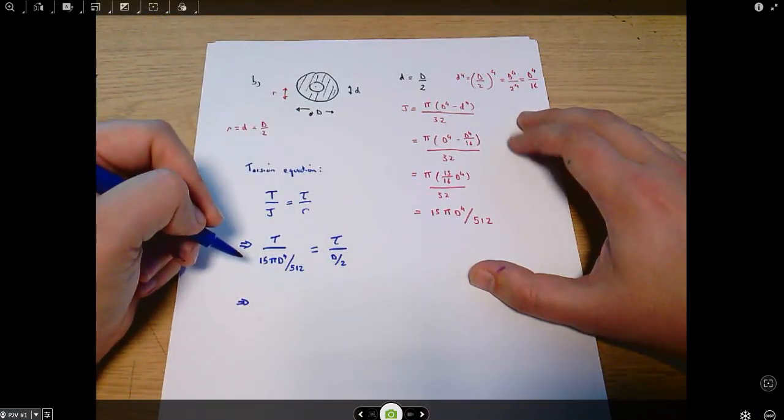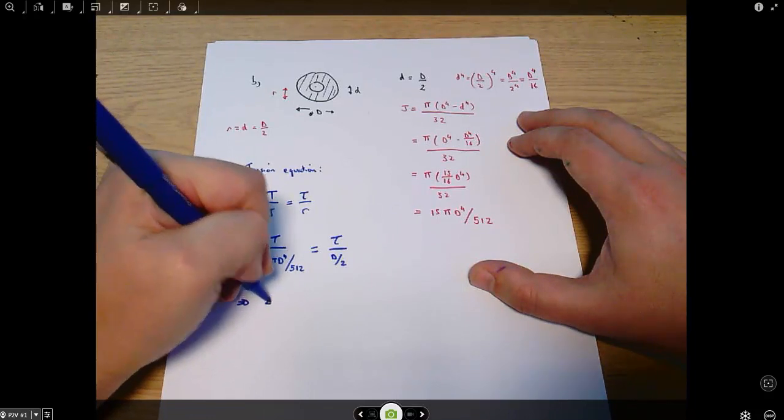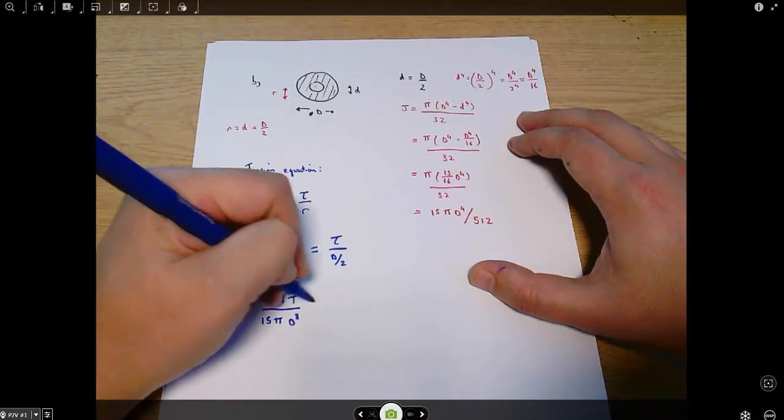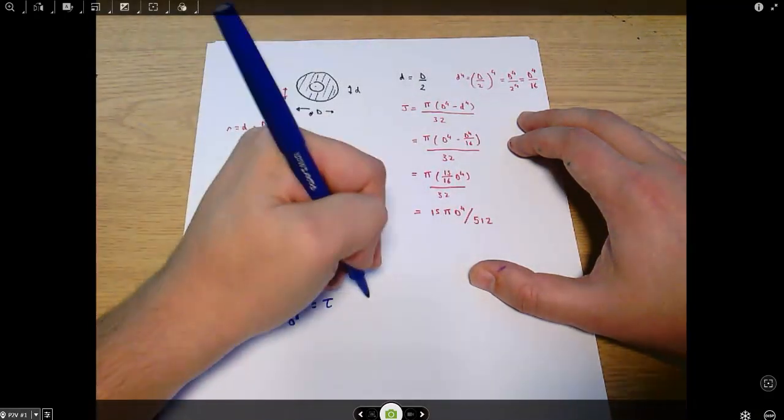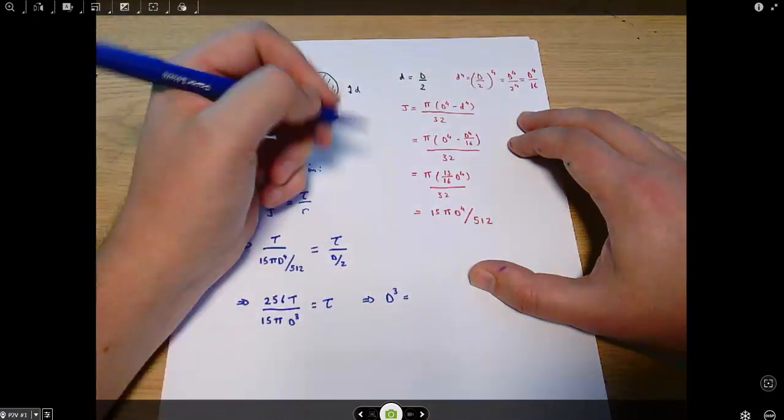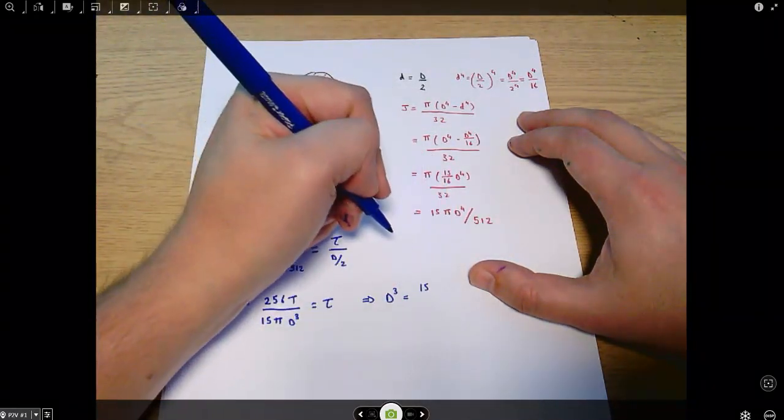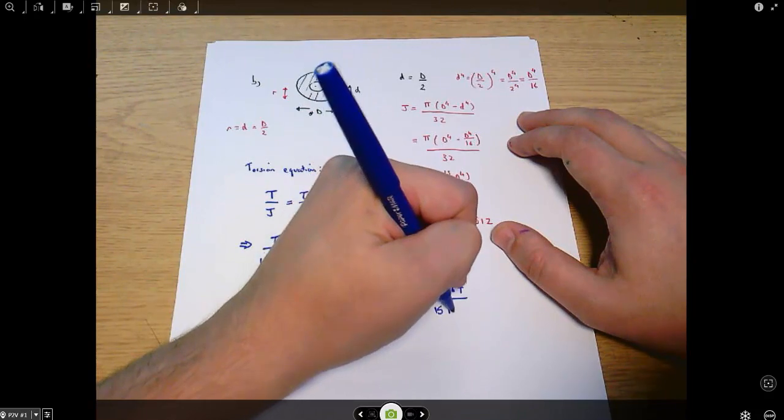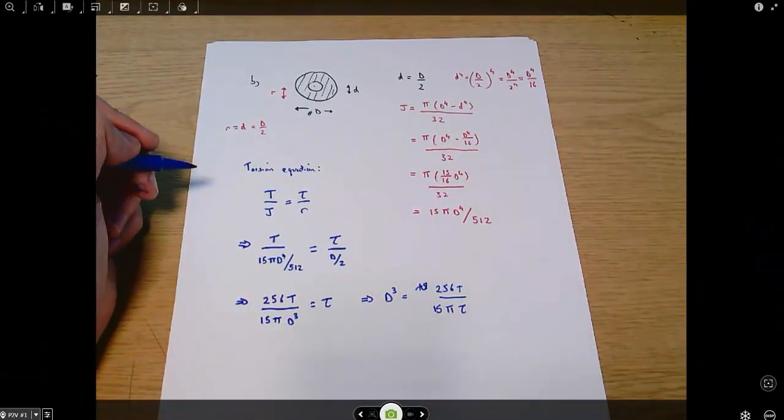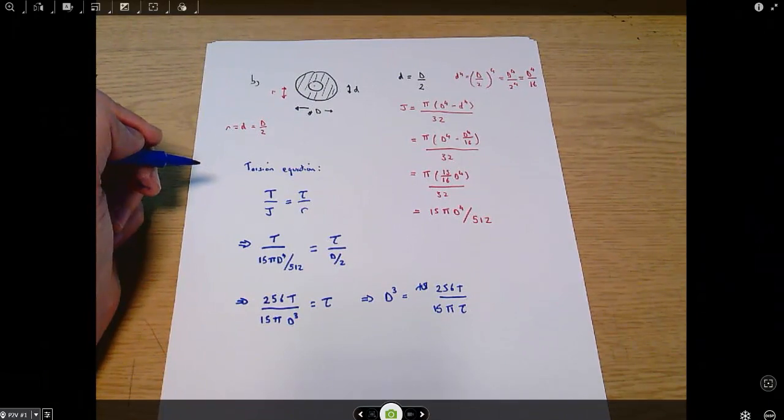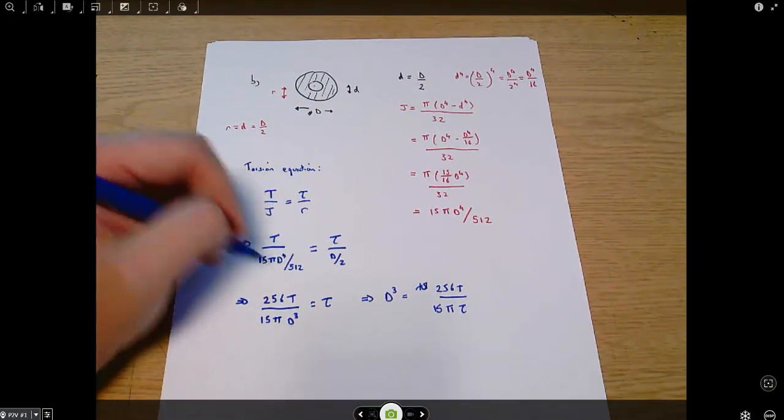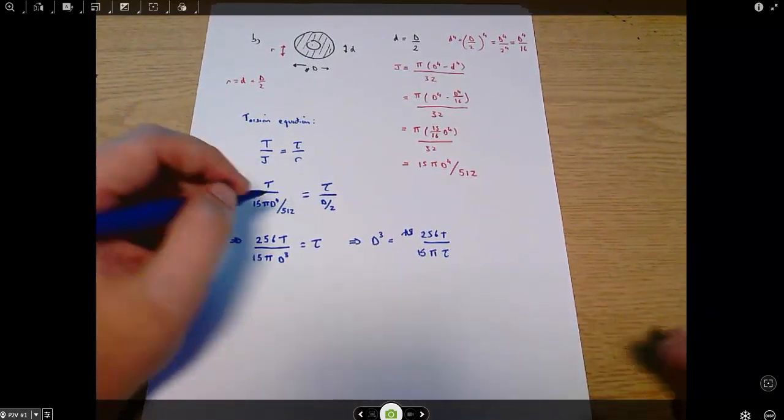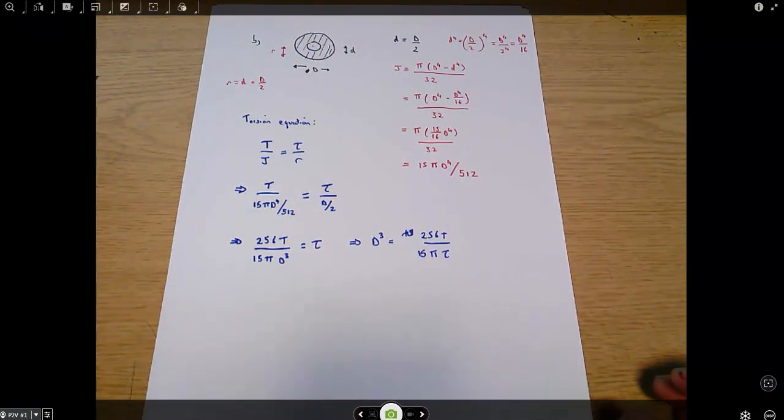And rearranging that, I'll get 256 capital T over 15 pi D cubed equals tau. Or d cubed equals 256 T over 15 pi tau. You'll notice that you have to be reasonably happy here with rearranging equations of this kind of form. There's a lot of it to do and I'm doing it at about the speed that you probably want to be up to by the time the exam comes around.